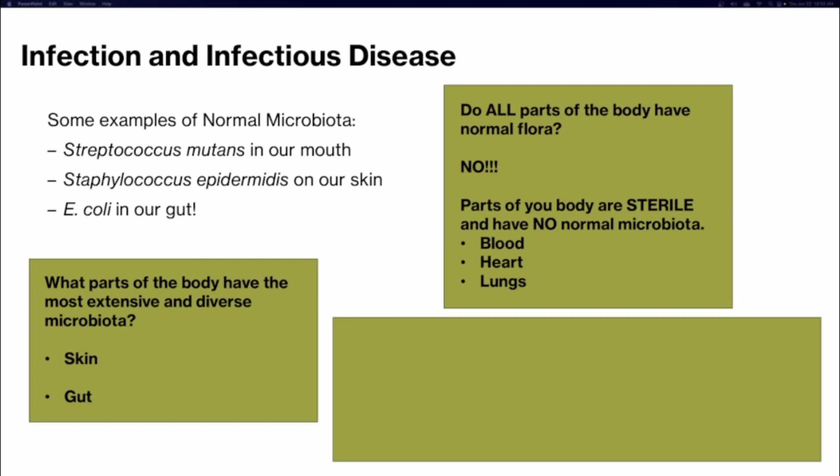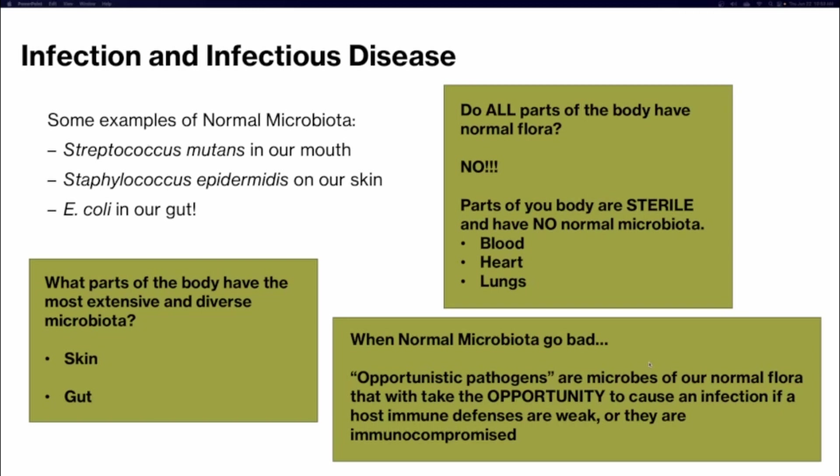Do all parts of the body have normal flora? Absolutely not. We have parts of the body that are sterile and should not have any normal microbiota, like the blood, heart, and lungs. If microbes are present here, that means there is an infection happening.